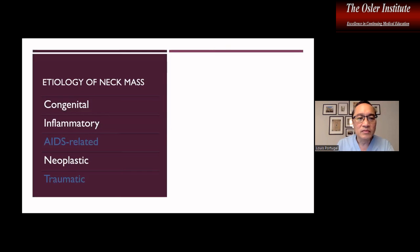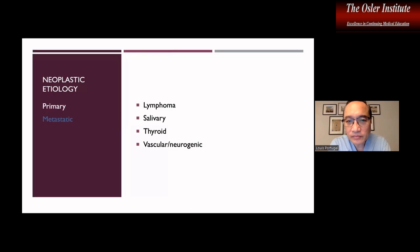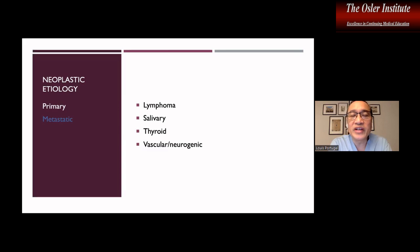Let's talk about the key topic of neoplastic etiology, which can be divided into primary versus metastatic. Primary tumors are tumors that arise primarily from the structure — in the case of a lymph node, lymphoma; or salivary tumors, thyroid tumors, and the important consideration of vascular and neurogenic tumors.